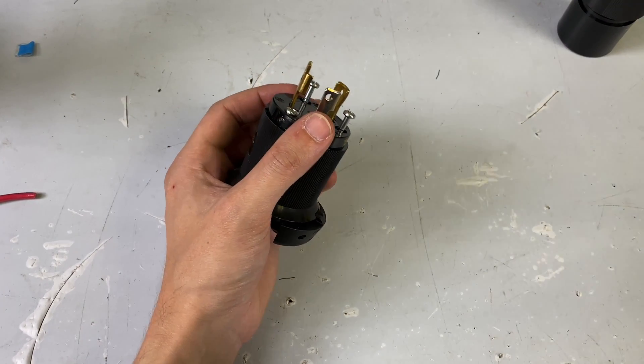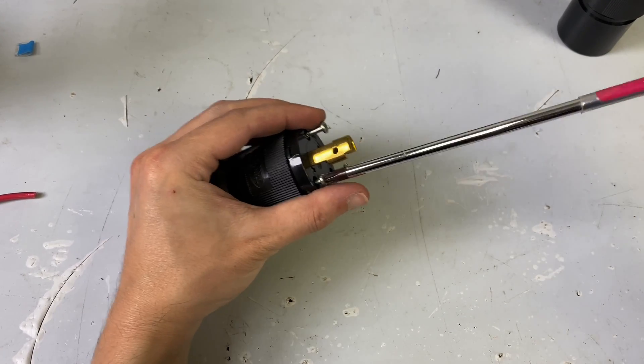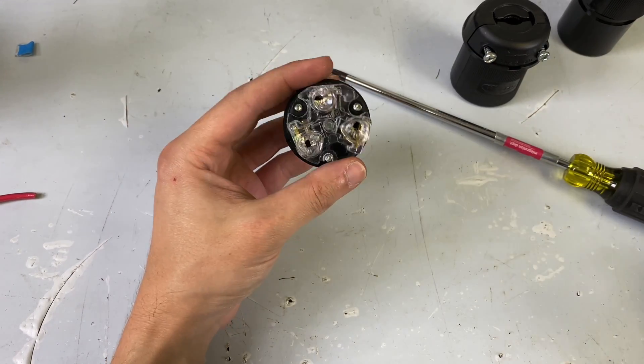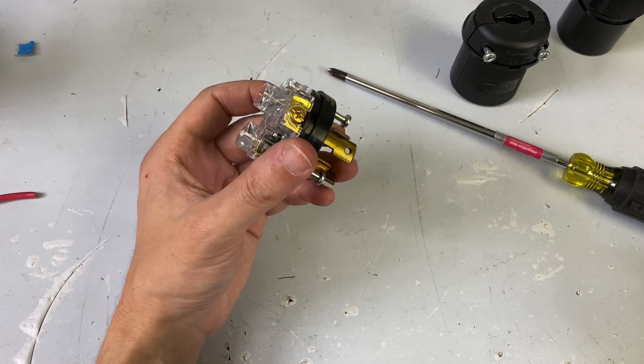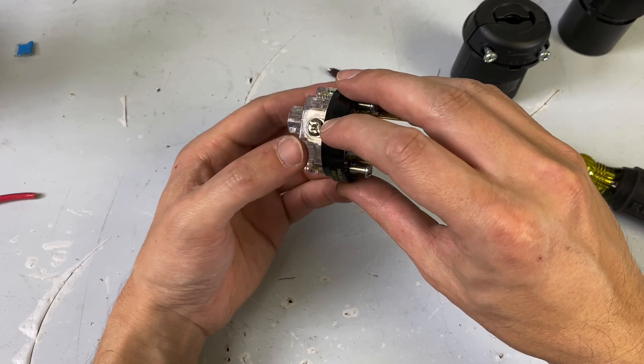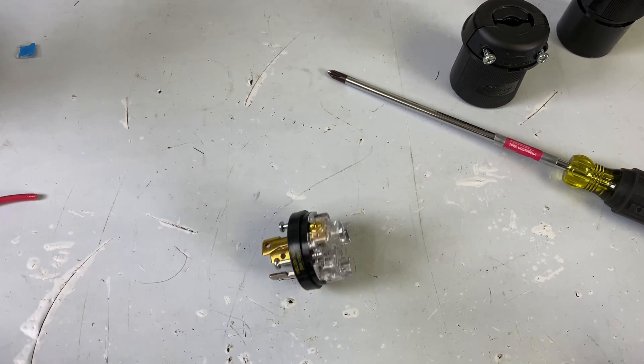So we're just going to take this guy apart. So despite this being a very large plug, it goes together just like a regular Edison. You have your brass terminal for hot, your silver terminal for neutral, and your green terminal for ground.